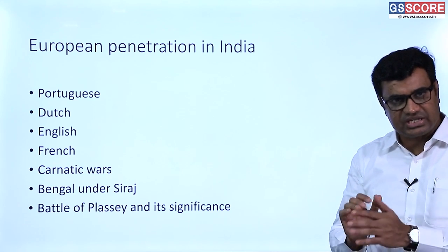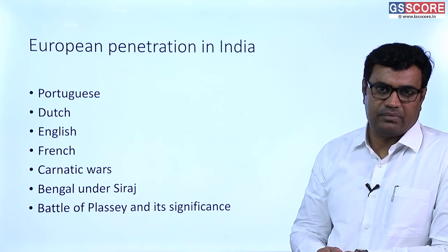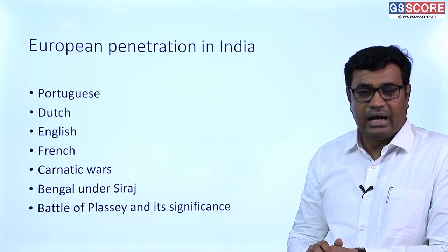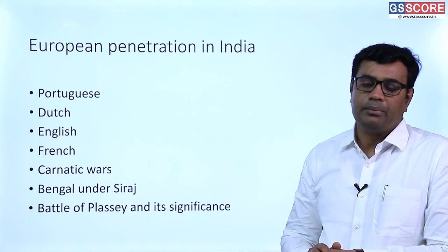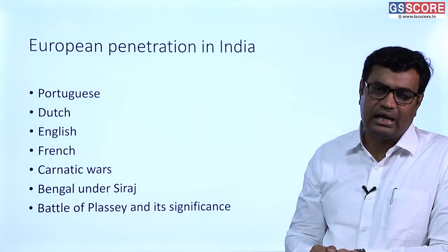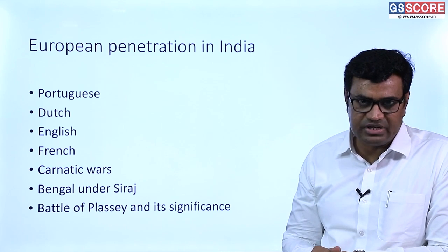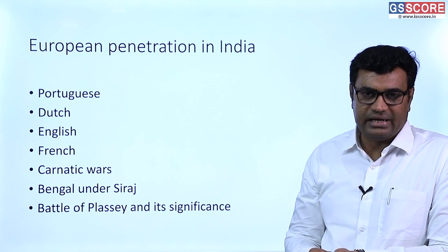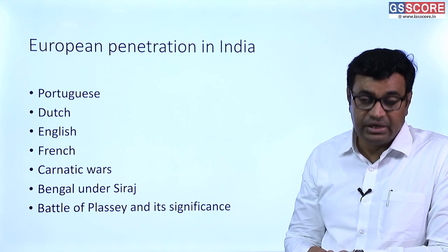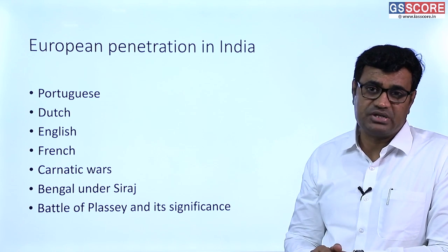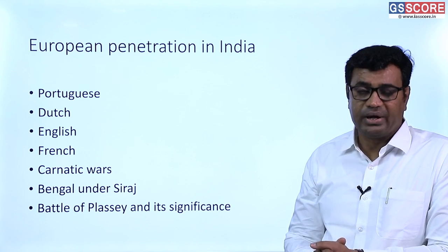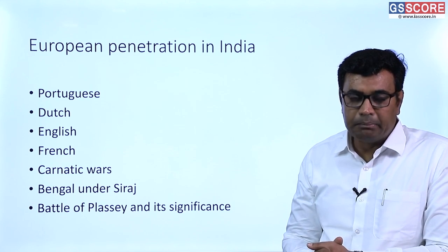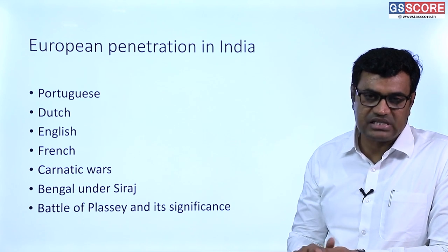The East India Company then began to enter into conflict with major Indian powers, the most prominent being Bengal. By the middle of the 18th century, Bengal was ruled by the powerful Nawab Siraj ud-Daulah. British wanted to impose their own system on Siraj ud-Daulah, but he did not accept. A decisive battle was fought at Plassey in 1757. Due to the betrayal of Mir Jafar, commander-in-chief of the Bengal army, Siraj was defeated and Mir Jafar became the next Nawab of Bengal.